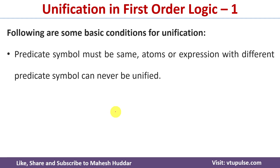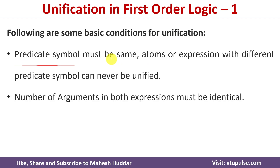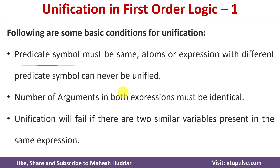The first condition is: whenever we want to perform unification, we need to make sure that the predicate symbol should be the same in both expressions. If the predicate symbol is different, we cannot perform unification. Similarly, there should be the same number of arguments in both expressions. The third condition is: whenever we have the same variable present in two different expressions, then unification is not possible.